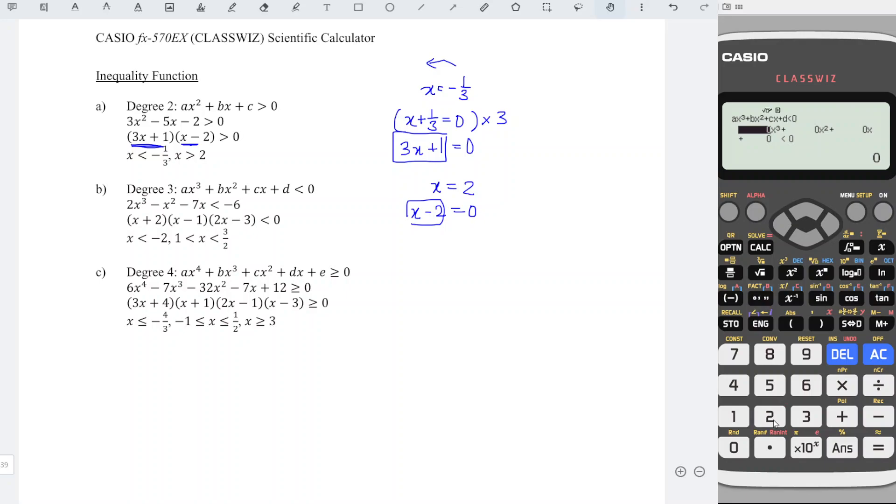Enter the values accordingly: 2x³ minus 1x² minus 7x. For the constant, according to the format, must be on the left hand side, but this is on the right, so what we have to do here is bring minus 6 to the left. Minus becomes plus, so we put 6.